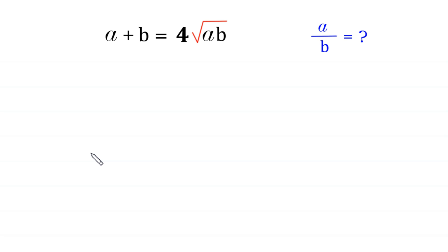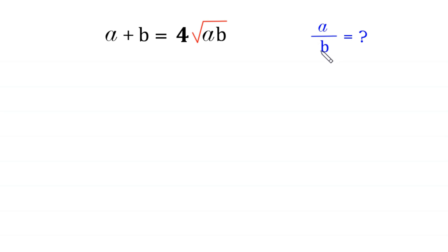Hello, welcome to how to solve this very nice algebra equation. A plus b is equal to four times the square root of ab. We need to find all possible values of a over b. So let's start by taking the square of both sides.